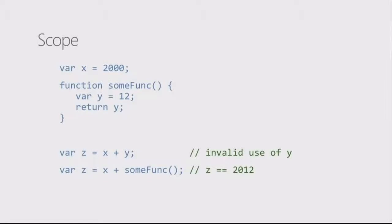So, let's look at this example of scope. We have a variable called x that's equal to 2,000. Then we have a function called some func, and we have a variable inside of that function that's equal to 12, and then we also immediately return that variable value from the function. So, down below, if I try to say variable z equals x plus y, it's an invalid use of y. And so, what would be the reason for that? It's hidden. It's hidden. We declared the variable in a function. That means it's not accessible outside of the function in terms of accessing that actual variable directly.